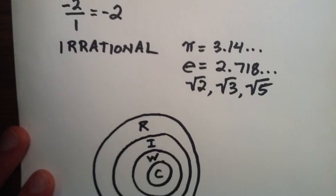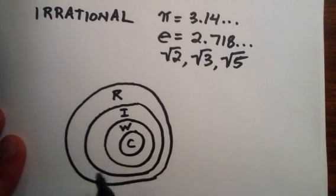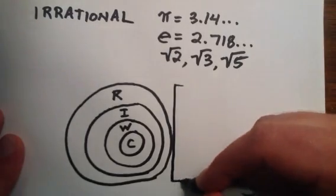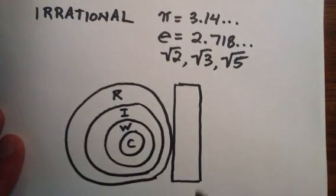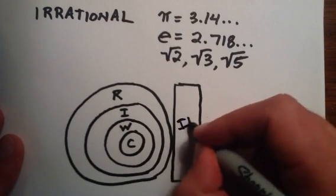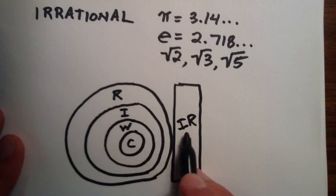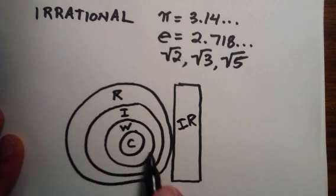And since the irrational numbers cannot be written as a ratio of two integers, we can't include them as a bigger circle around these other circles. So instead, I'm going to just draw a little box over here. And this box represents all of the irrational numbers.